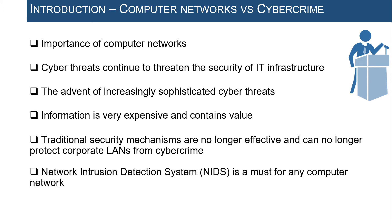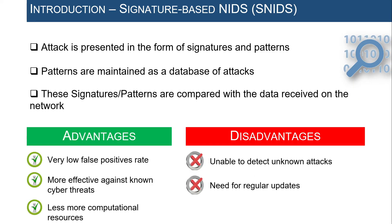The only devices capable of detecting intrusions that could jeopardize the security of local area networks are network intrusion detection systems — and this is what our research topic is about. Intrusion detection systems are essential to any corporate network because they can detect suspicious activities that have bypassed traditional security mechanisms including the network firewall. There are two types of IDS: the first is SNIDS, or the signature-based IDS.